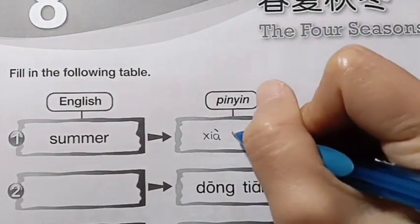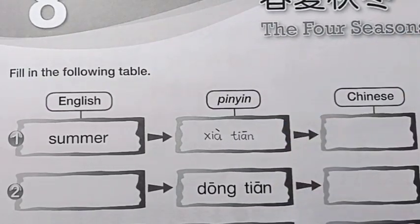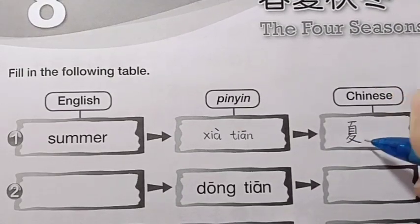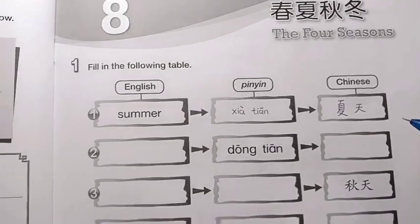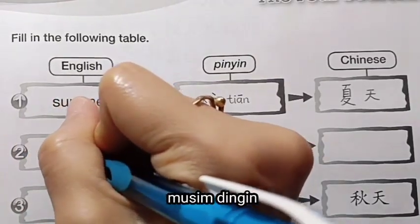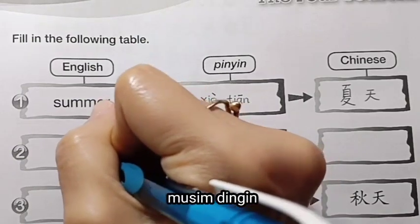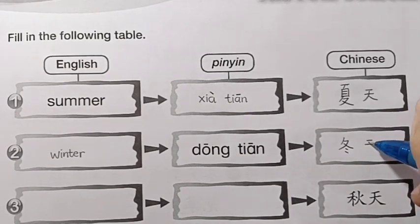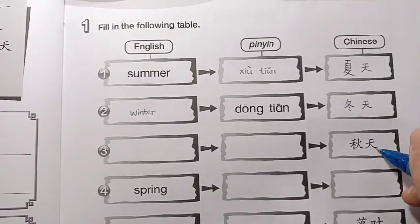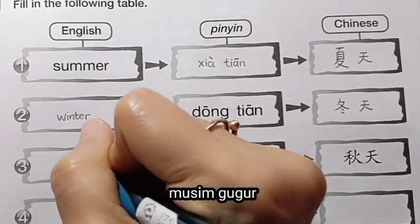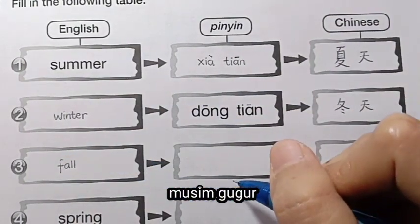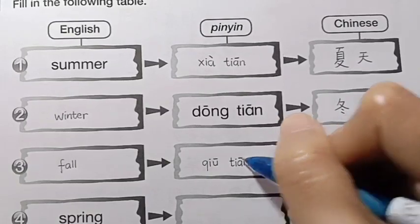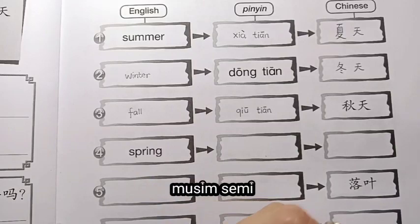Summer is Xiatian. Number two, Dongtian is Winter. Number three, Qiutian is Fall. Number four, Spring is Chuntian.